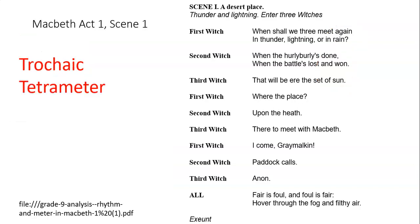Shakespeare also makes use of trochaic tetrameter. That's a complicated term, but effectively what we've got here are more or less eight-syllable lines of poetry with a stressed syllable and then an unstressed syllable, creating a ba-boom, ba-boom, ba-boom, ba-boom effect. So the first line could read: 'When shall we three meet again — in thunder, lightning, or in rain — when the hurly-burly's done.' It creates a really unnatural sense from the witches; it's actually meant to echo the sense of a heartbeat, which might make everything seem a little bit more mortally dangerous.